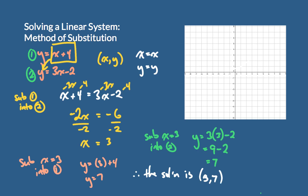We finish with a concluding statement: therefore the solution is the coordinate (3, 7). And we can see this graphically — here is the line y equals x plus 4, and here is the line y equals 3x minus 2, and indeed they have a point of intersection right here at the coordinate (3, 7).